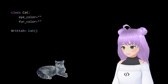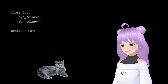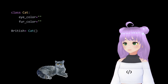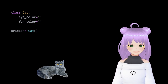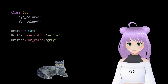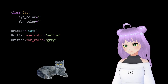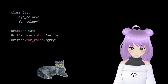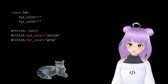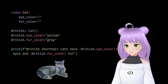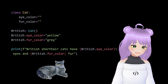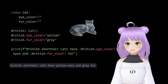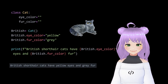Let's try with a new example. This time, we are going to work with a British Shorthair cat. We set up a cat class inside our variable called British, and then we set the defining characteristics of a British Shorthair cat to differentiate it from other types of cats. In this case, we are going to set the eye color as yellow and the fur color as gray. As we did before, we check with a print statement if everything is working correctly, and it will show us that British Shorthair cats have yellow eyes and gray fur.